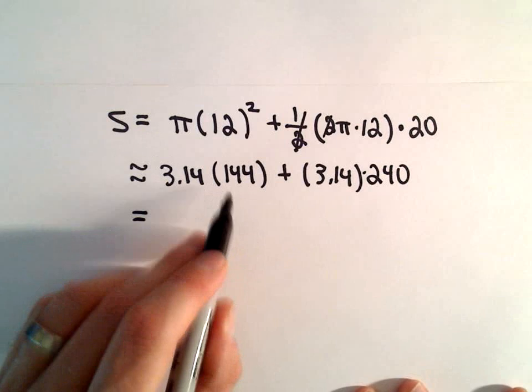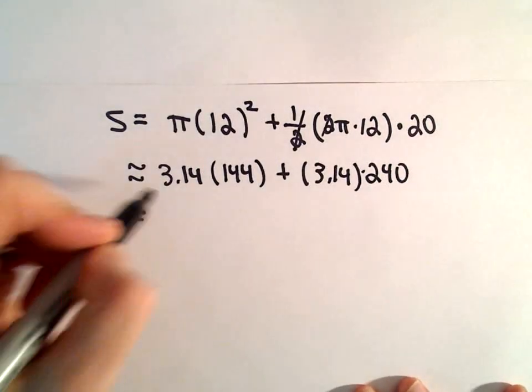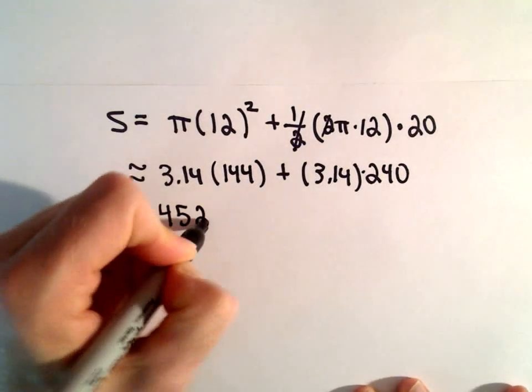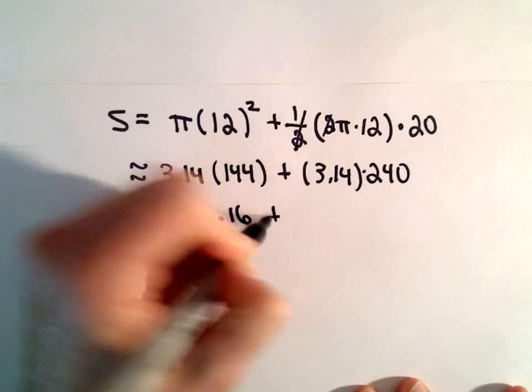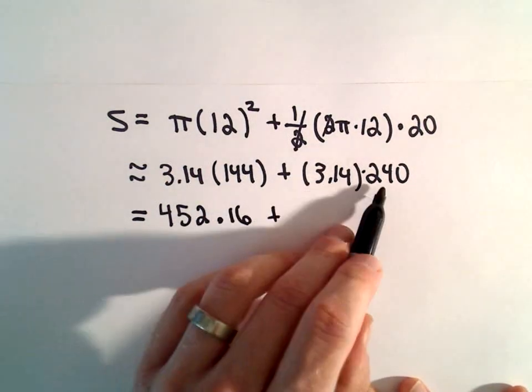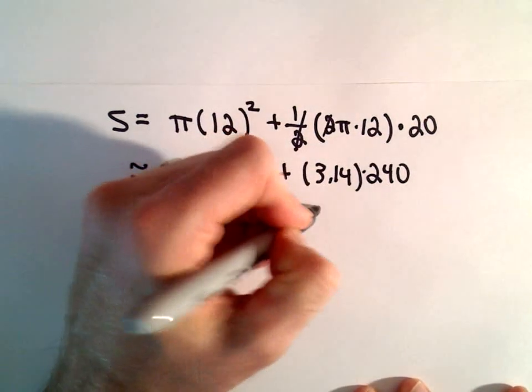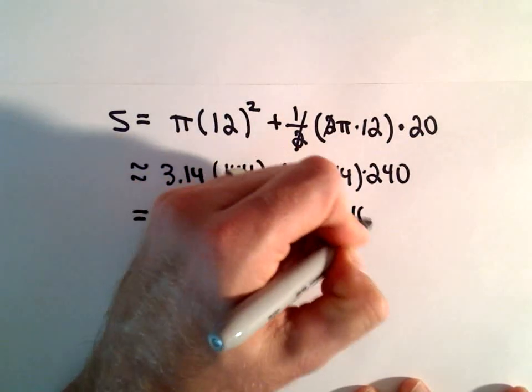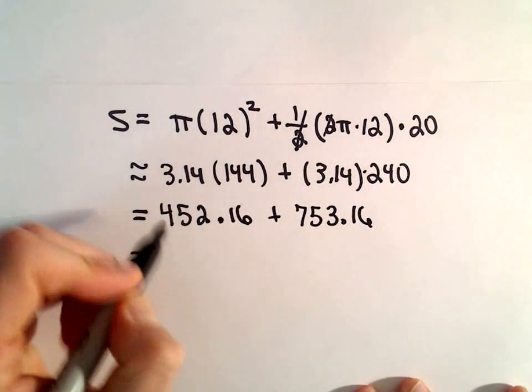So 3.14 multiplied by 144, I'm getting 452.16. 3.14 times 240, that'll be 753.16.